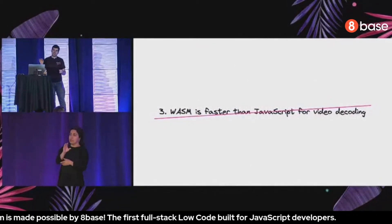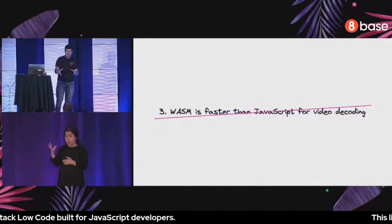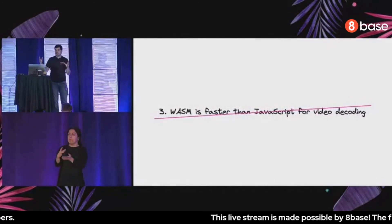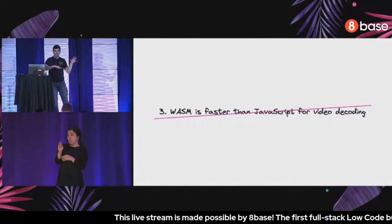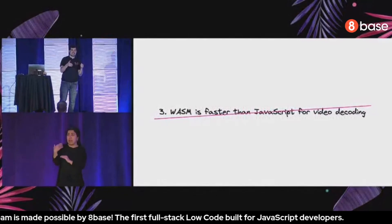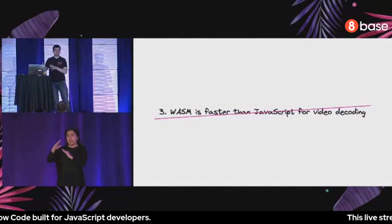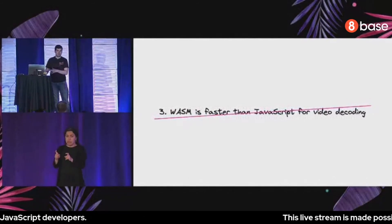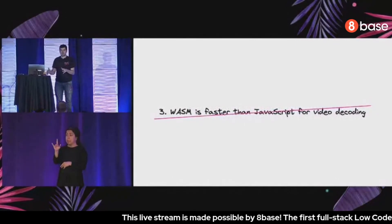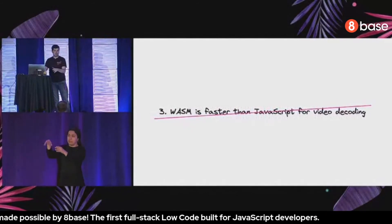WebAssembly still has a role to play though: code reuse. There are many video container formats with a lot of complexity, and for the past 30 years C libraries have implemented and battle-tested all of this. In JavaScript this is still nascent. So one great use of WebAssembly is compiling those battle-tested C libraries — like FFmpeg — into Wasm so we can use them in the browser.